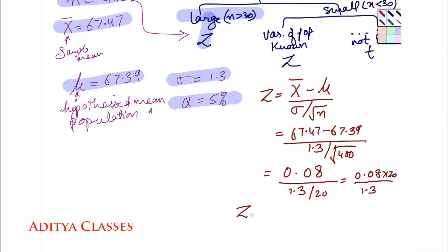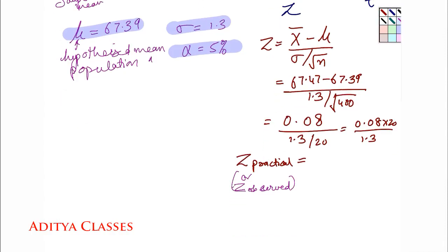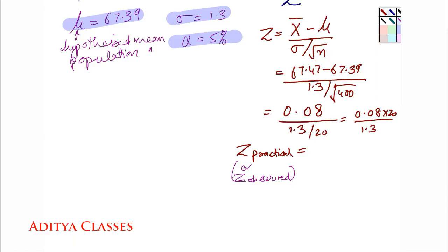To further solve it, you'll get Z practical is equal to, or at times you can even call it Z observed. Z practical, how much is it? We get 1.6 upon 1.3 or 1.23. Remember, this is an important value, this is Z practical.